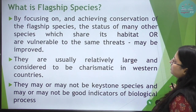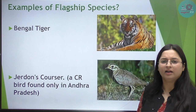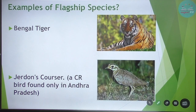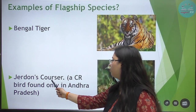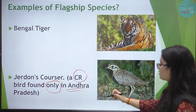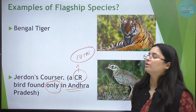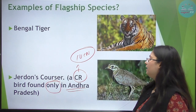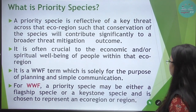An example is the Jerdon's courser, a critically endangered bird found only in Andhra Pradesh. This is its IUCN status — critically endangered.